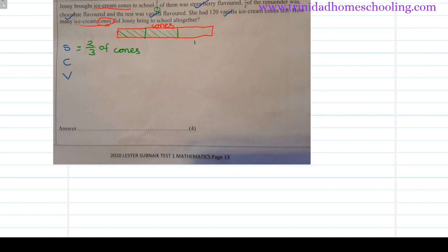Now what is left here? If this is two-thirds, then what is left is one-third. Now this one-third that is left is split between the chocolate and vanilla. Let's see what else it said. We have this half here. Half of the remainder was chocolate flavored and the rest was vanilla. So the remainder here is this one-third. Half of it, we split this into two pieces. Half of it is chocolate.